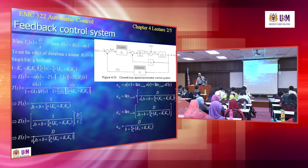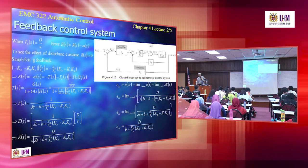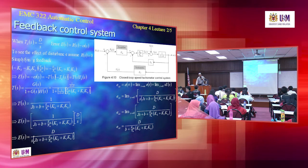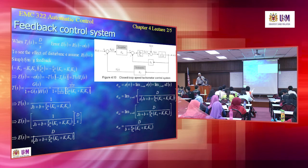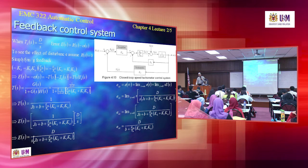With this transfer function, we substitute back into the error equation E(S), replacing the disturbance with the step function D/S. After simplifying, E(S) equals D divided by S multiplied by (J·S plus B plus KM/RA multiplied by (KB plus KT·KA)). For the disturbance analysis, we are interested in the steady state.